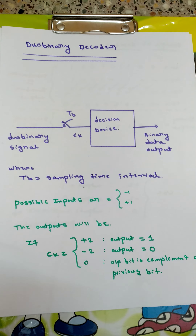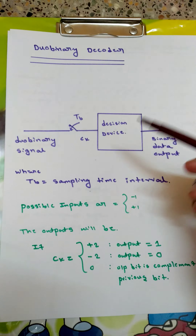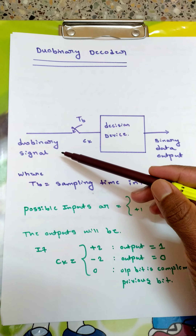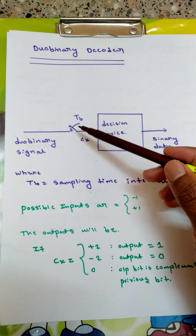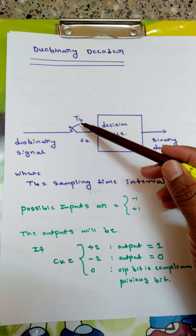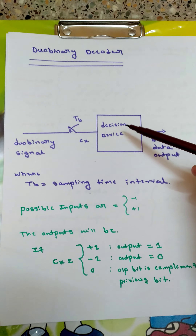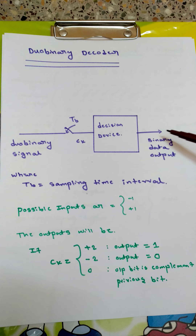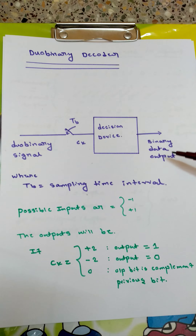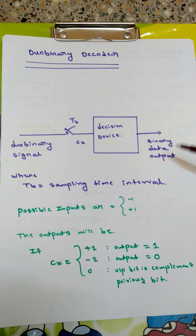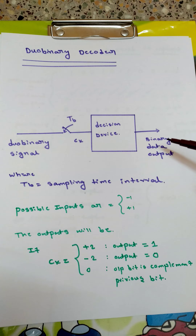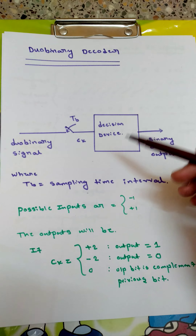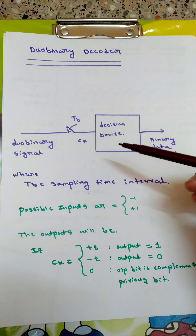First we have the block diagram. It is very simple — the duobinary signal comes in and is sampled at tb seconds. It is then applied to a decision device, and we get the binary data output, which is the same data we transmitted or gave as input to the encoder block.